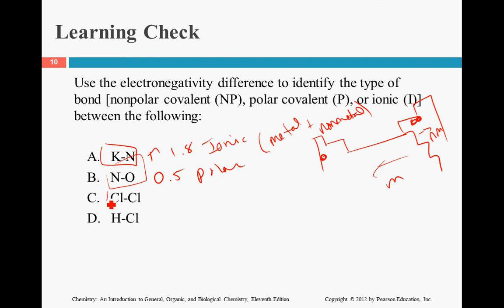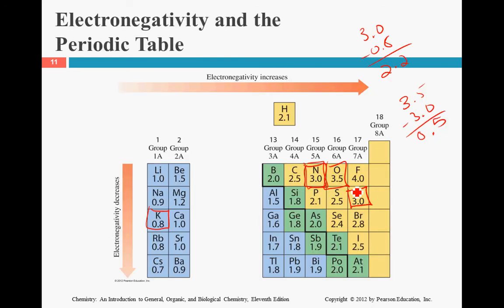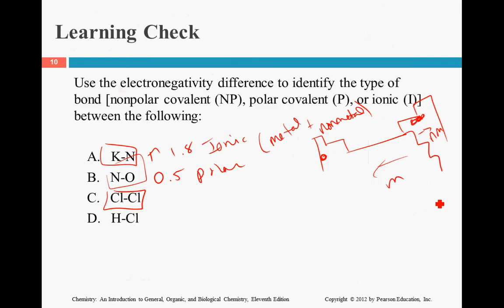Chlorine and chlorine, the exact same element. Right here on the periodic table. Right here. 3.0. Anything that's bonded to itself is automatically a non-polar. That is a 0 for its electronegativity difference, which means it is non-polar.